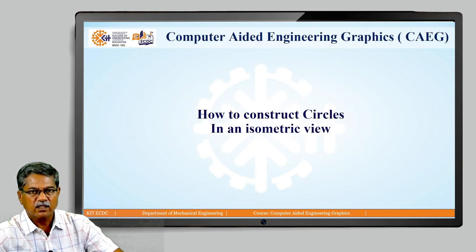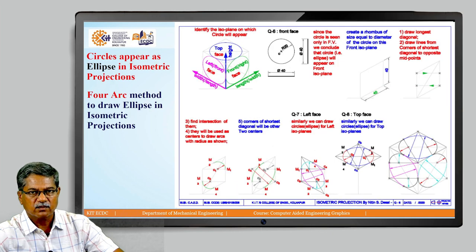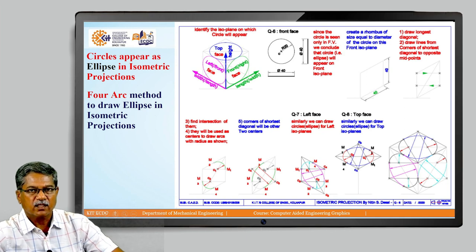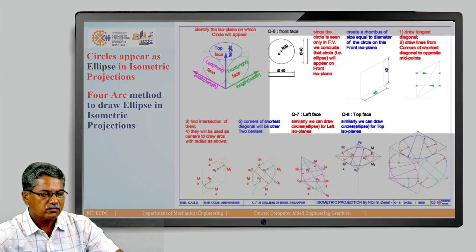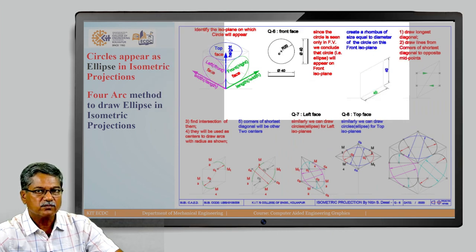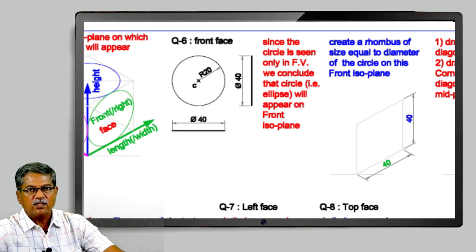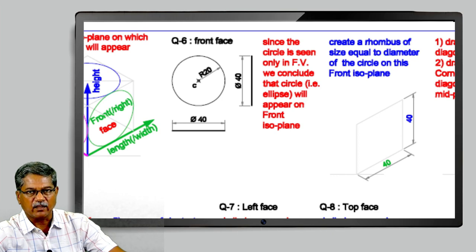Next, we will see how to construct circles in an isometric view. Circles are not going to appear as circles in an isometric view — they are going to appear as an ellipse. We will use a method called the four-arc method to draw the ellipse. In the front view, the circle is visible; in the top view and side view, it appears as a line. The first step is to create a rhombus with size equal to the diameter of the circle.